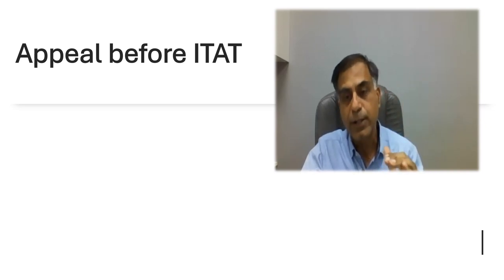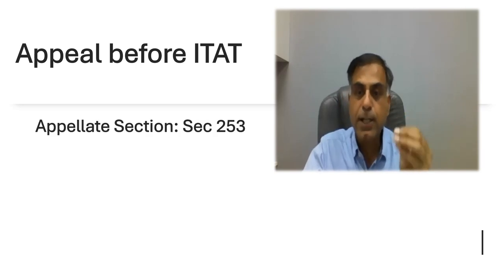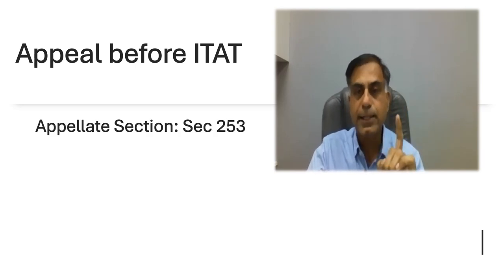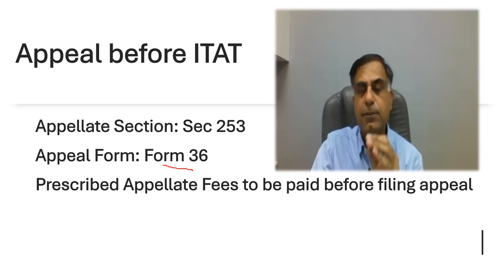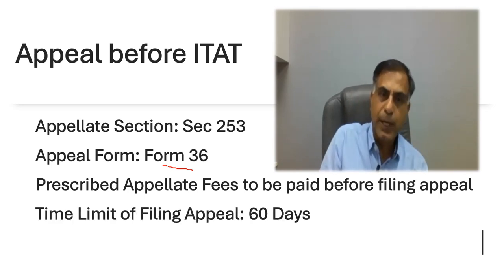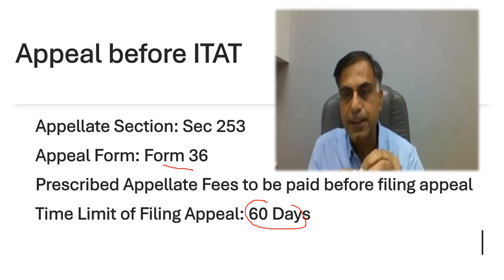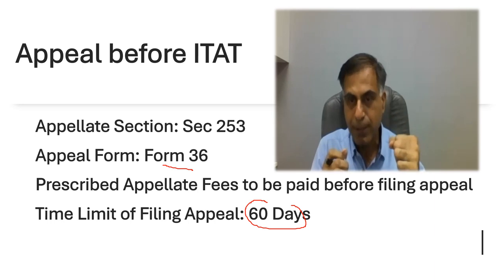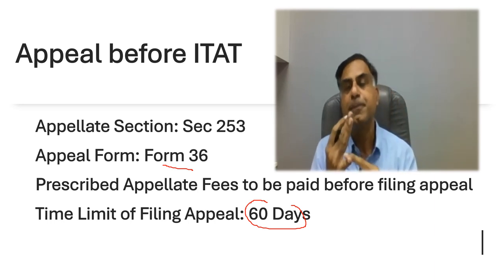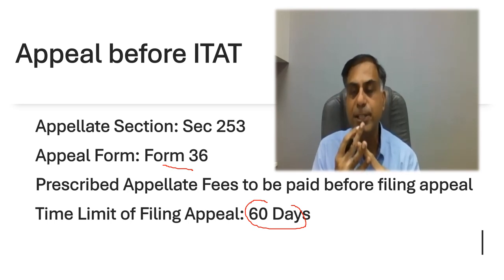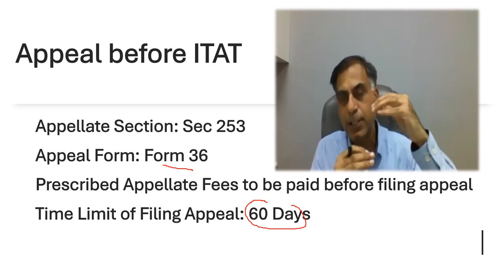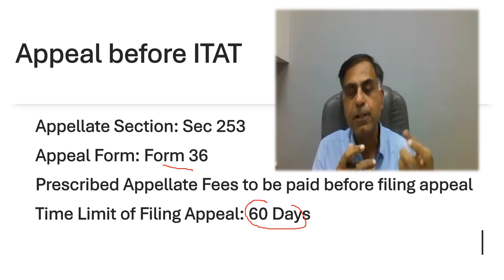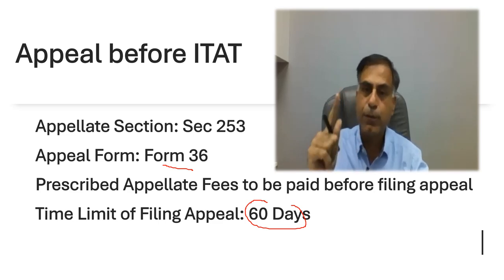Or, if CIT Appeal has given you a favour but the department is not satisfied with the order of CIT Appeal, the department can also file an appeal before ITAT. The appellate procedure of ITAT is primarily mentioned under section 253 read with section 254 of the Income Tax Act 1961. Such an appeal should be filed in Form 36. The prescribed appellate fees is also required to be paid. The time limit for filing appeal before ITAT is 60 days from the date of receipt of the relevant order of CIT or CIT Appeal. When CIT levies a penalty or passes a revision order, the Assessee can also file an appeal before ITAT under section 253.